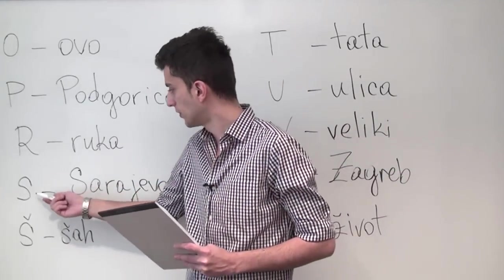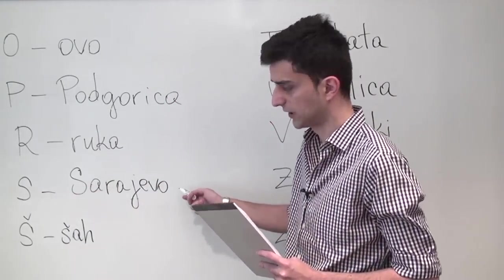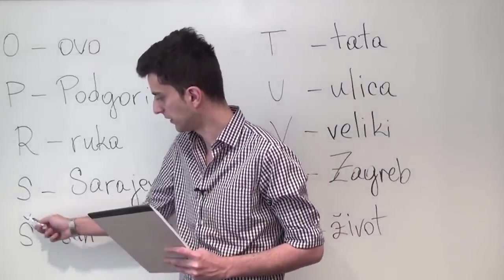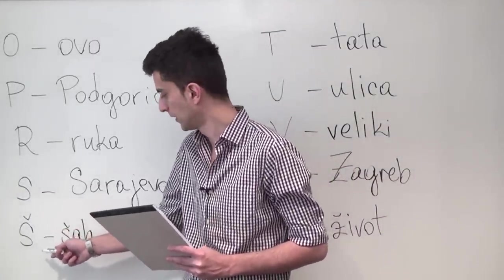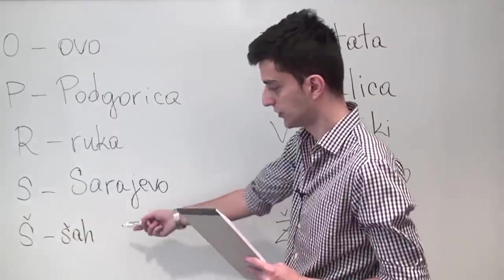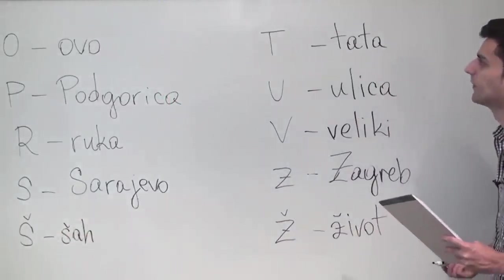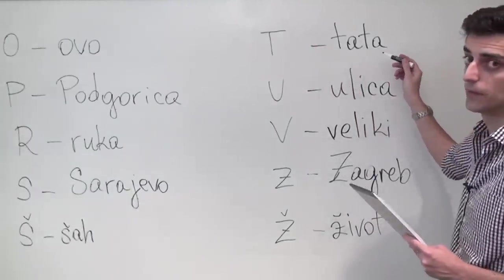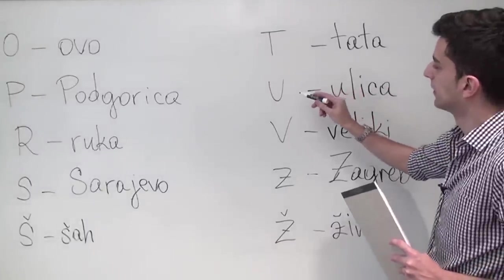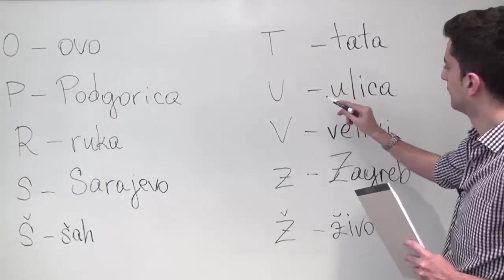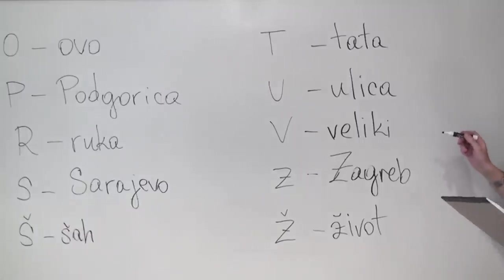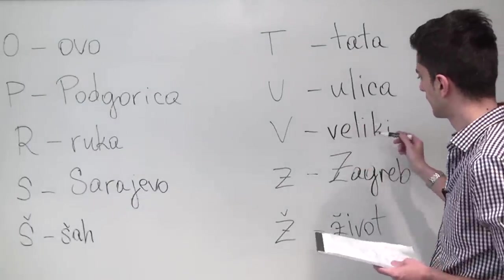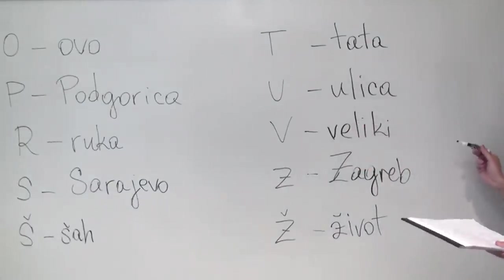The letter S is pronounced S, as in Sarajevo, the capital city of Bosnia and Herzegovina. Letter Š with a caron is pronounced Š, as in šah. Letter T is pronounced as T, as in tata which means dad. Letter U is pronounced as U, as in ulica meaning street. Letter V is pronounced V, as in veliki meaning big or large.